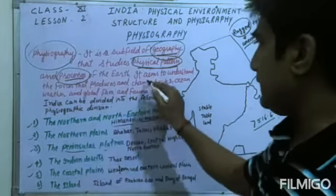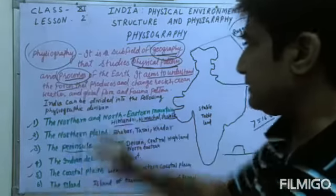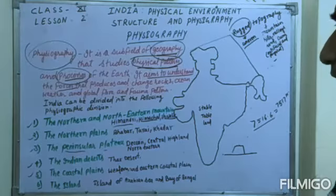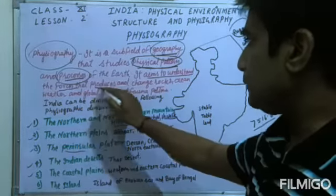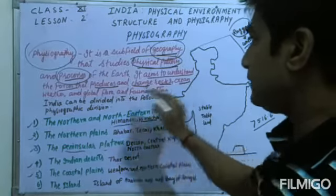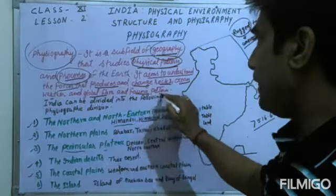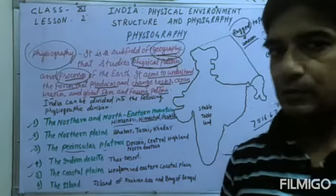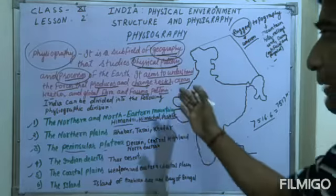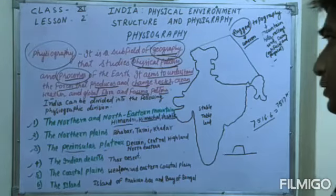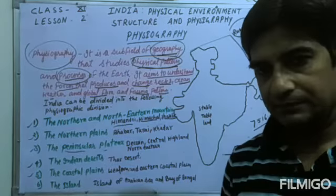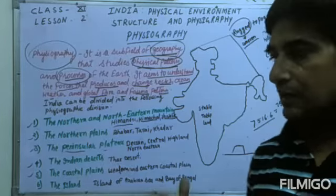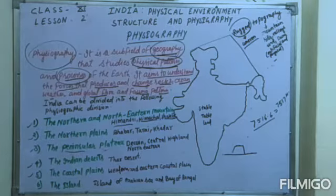Physiography aims to understand the forces — forces such as climate, temperature, topography, and many other things — that produce and change rocks, oceans, weather, and global flora and fauna patterns. Topography is very responsible for influencing all these features. It is a very important topic and is also studied as a separate subject in further classes.